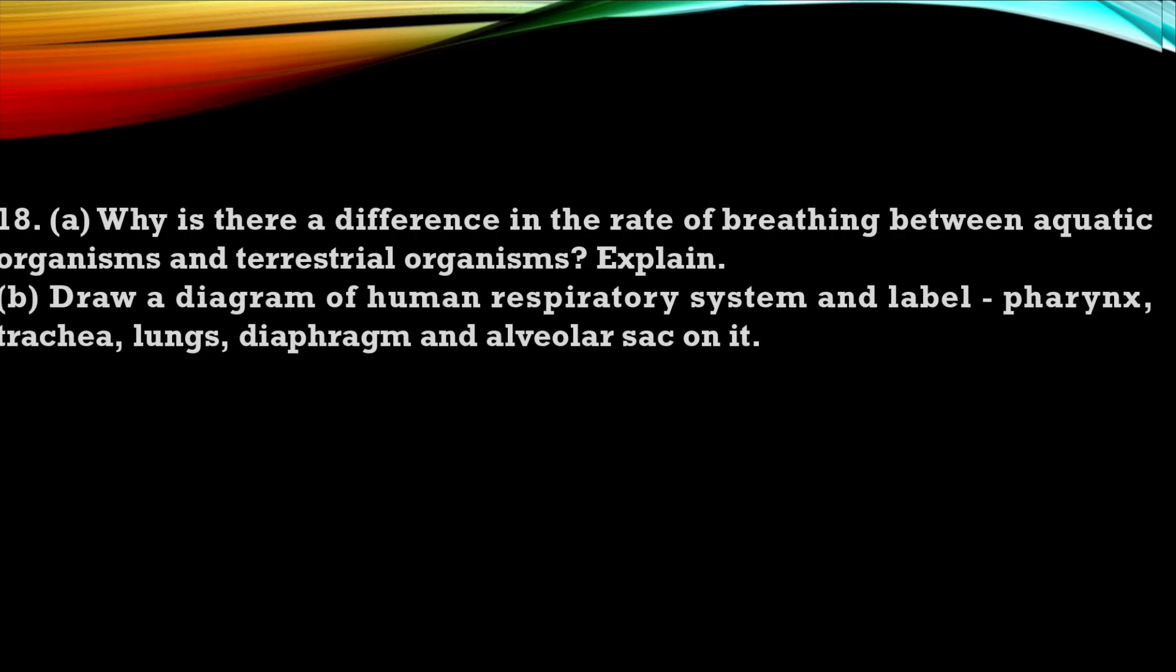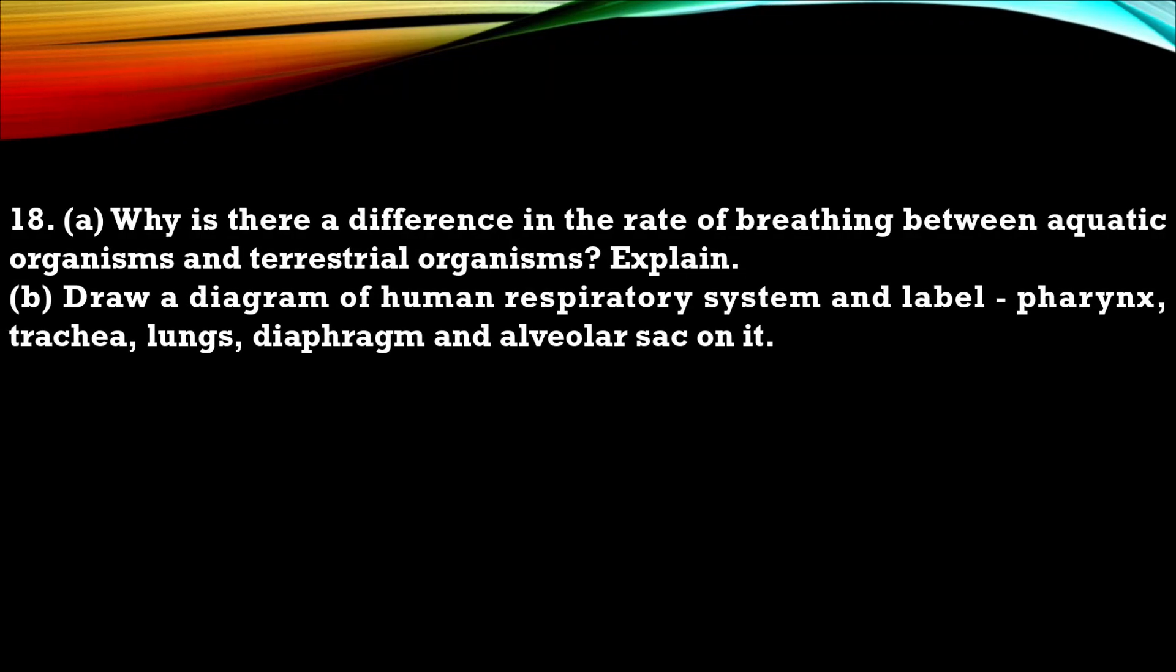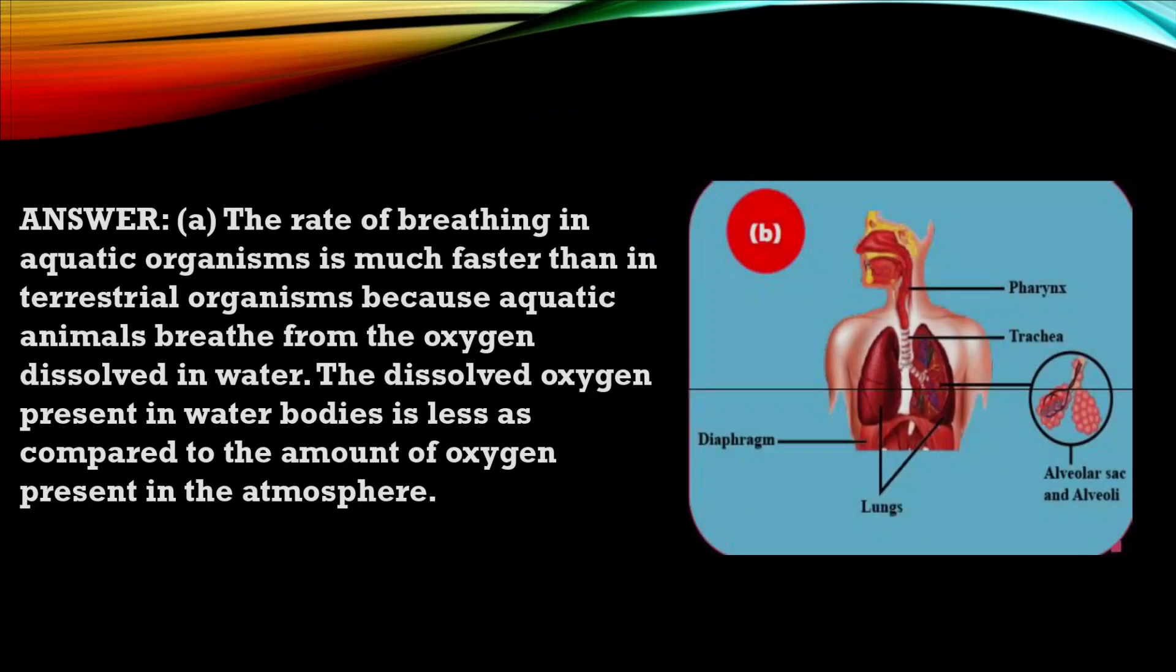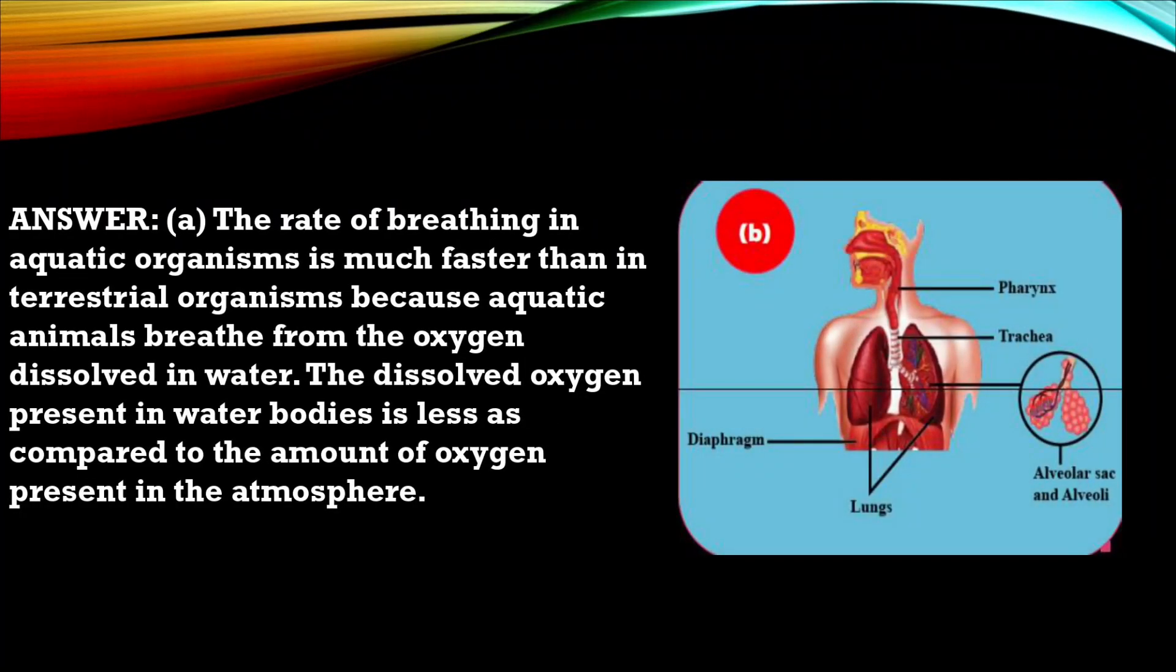Question 18. Why is there a difference in rate of breathing between aquatic organism and terrestrial organism? Explain. B. Draw diagram of human respiratory system and label pharynx, trachea, lungs, diaphragm and alveolar sac on it. So this is the answer with diagram.